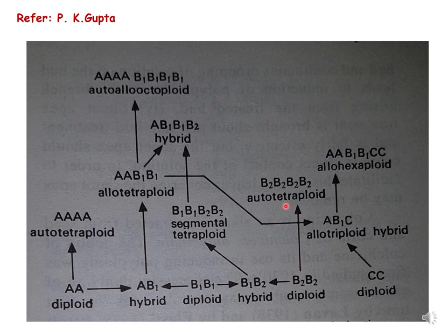When B2B2 duplicated, this is an autotetraploid, while when hybridization takes place between this allotetraploid and the diploid, a triploid is formed and this is an allotriploid. When the allotetraploid is further duplicated, this becomes an allotetraploid. I hope this chart is clear to you and you can refer PK Gupta further.